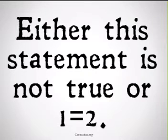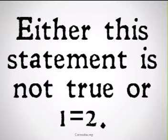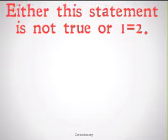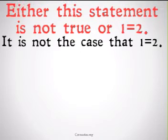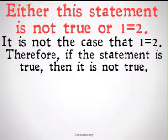Now take the following statement: Either this statement is not true, or 1 equals 2. We can, through a simple proof, show it's not the case that 1 equals 2. We had a falsitical paradox on that earlier.